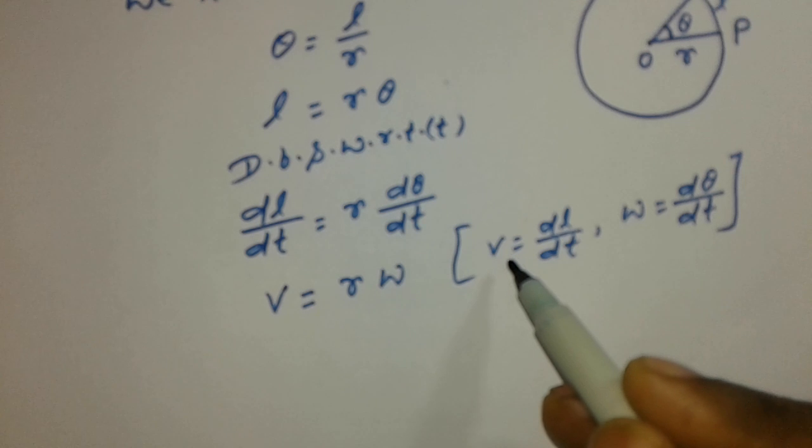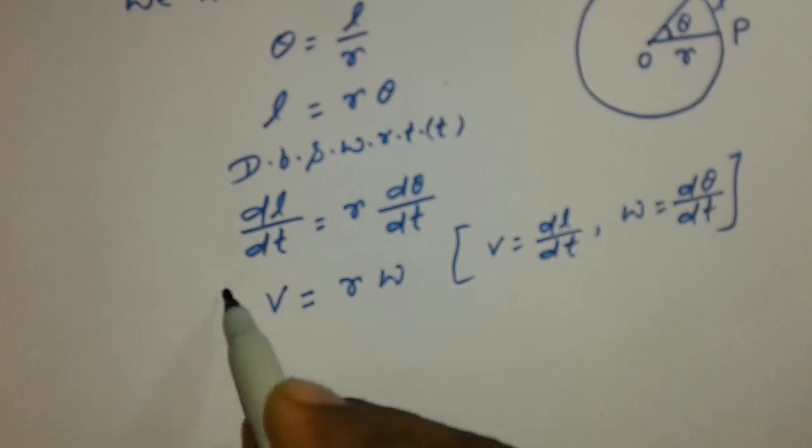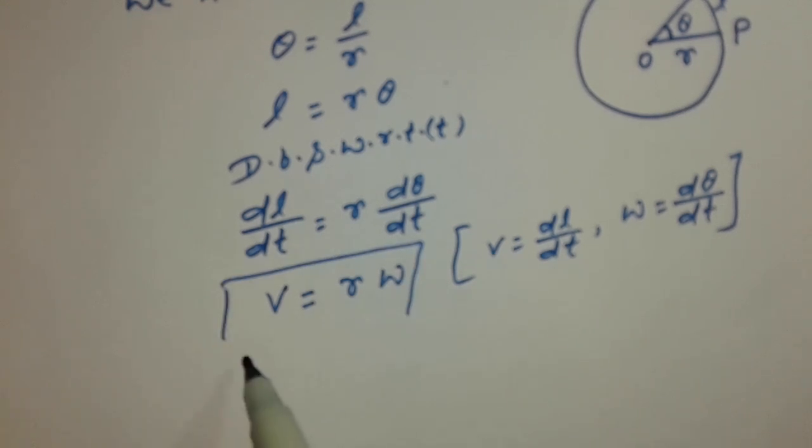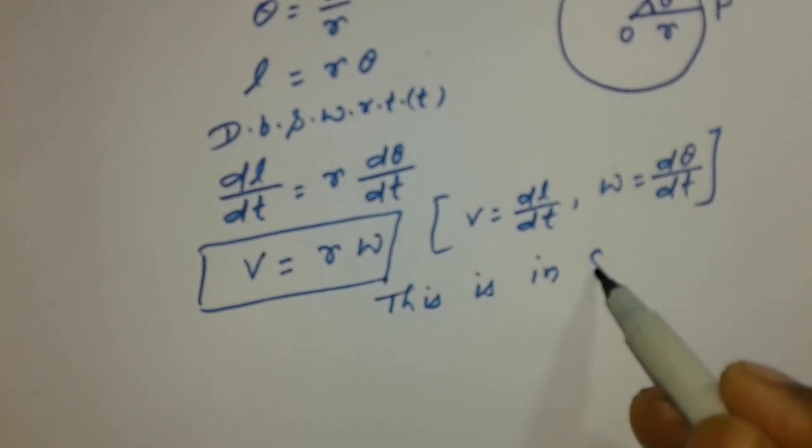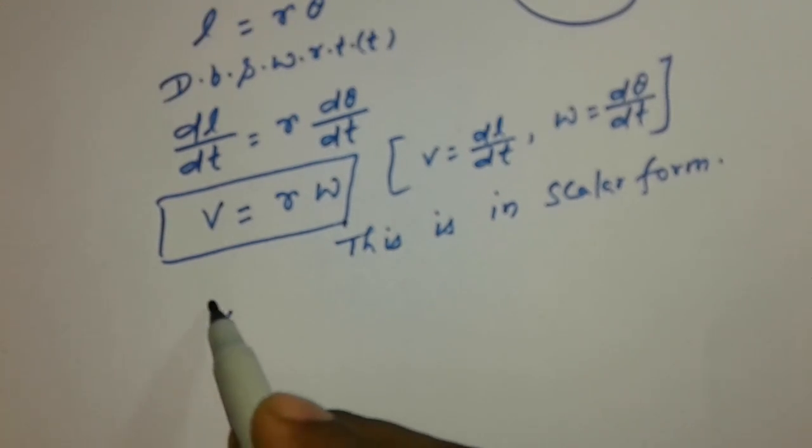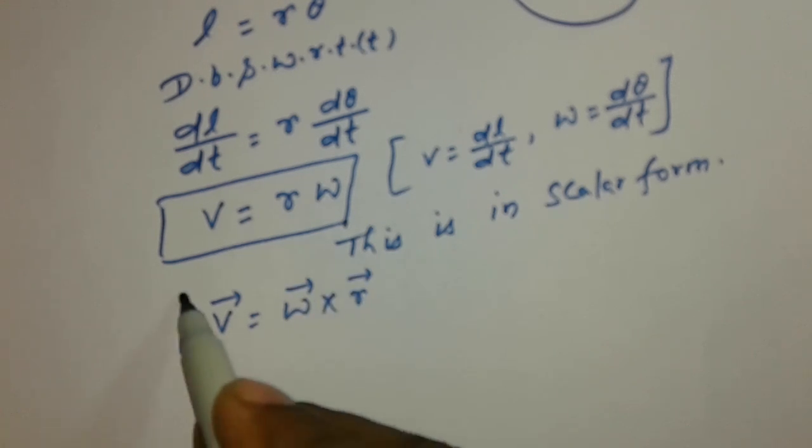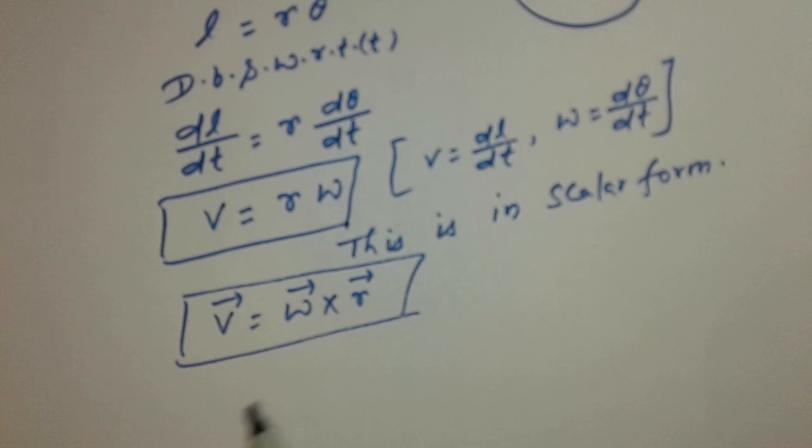So V is equal to R omega, this is in scalar form. In vector form, we can write V is equal to omega cross R.